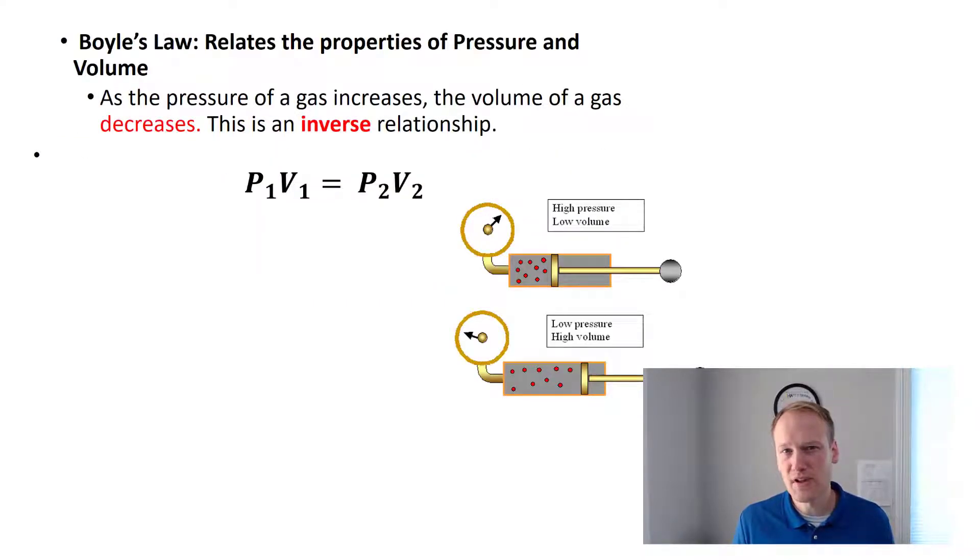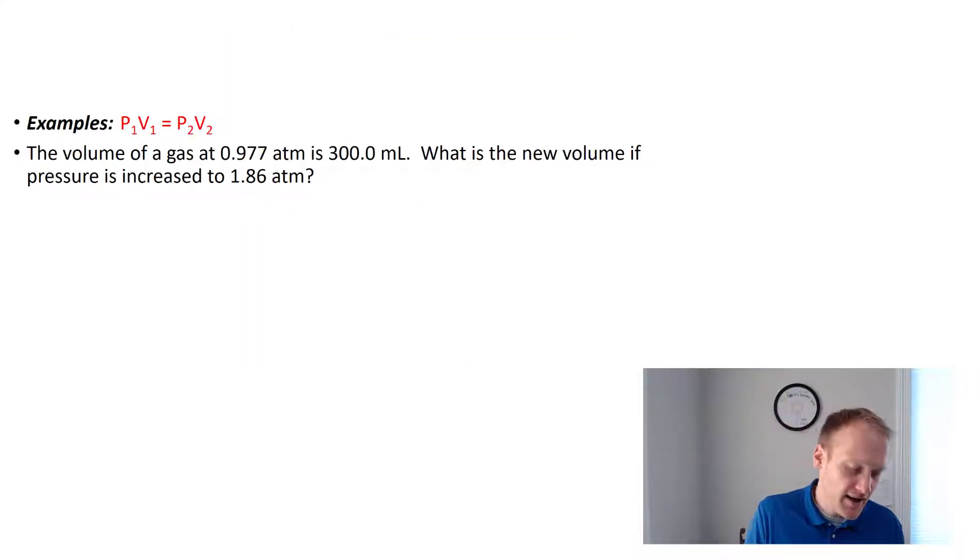The first equation we're going to talk about is Boyle's Law. Boyle's Law shows the relationship between pressure and volume. Pressure and volume is an inverse relationship, meaning as pressure increases, volume decreases. If you look at this piston, as we increase the pressure on the gas, it's going to take less volume. You even understand this if you squeeze a balloon and increase the pressure on the outside, it's going to decrease the volume of that balloon. The math for Boyle's Law looks like this: P1V1 equals P2V2. Let's try an example problem.